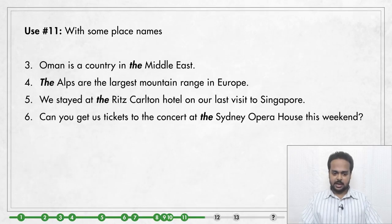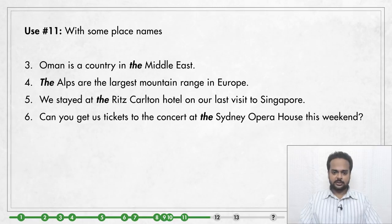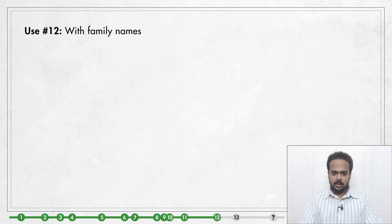Here are some examples: 'Oman is a country in the Middle East' — notice there's no 'the' before Oman, but we say 'the Middle East.' 'The Alps are the largest mountain range in Europe.' 'We stayed at the Ritz Carlton Hotel on our last visit to Singapore.' 'Can you get us tickets to the concert at the Sydney Opera House this weekend?'